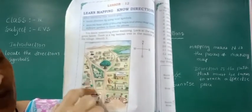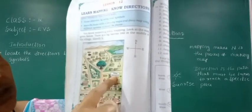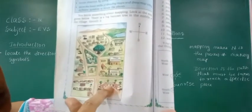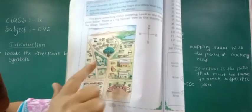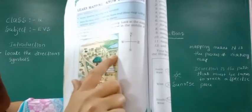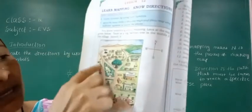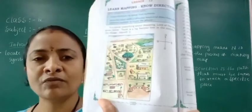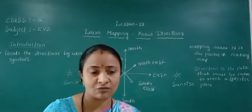Surrounding the banyan tree, many places are there: panchayat, veterinary hospital, school, fair price shop, library, park, hospital, well, post office, and pond. Many places are there surrounding the banyan tree. Now we will study which places come in which directions.